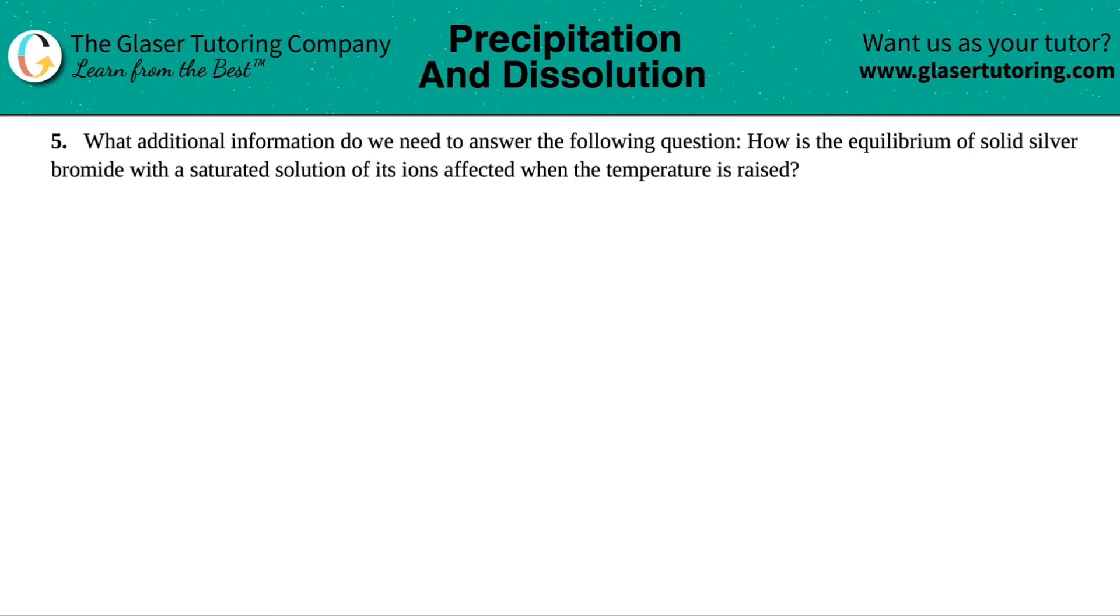Number five: what additional information do we need to answer the following question? How is the equilibrium of solid silver bromide with a saturated solution of its ions affected when the temperature is raised?